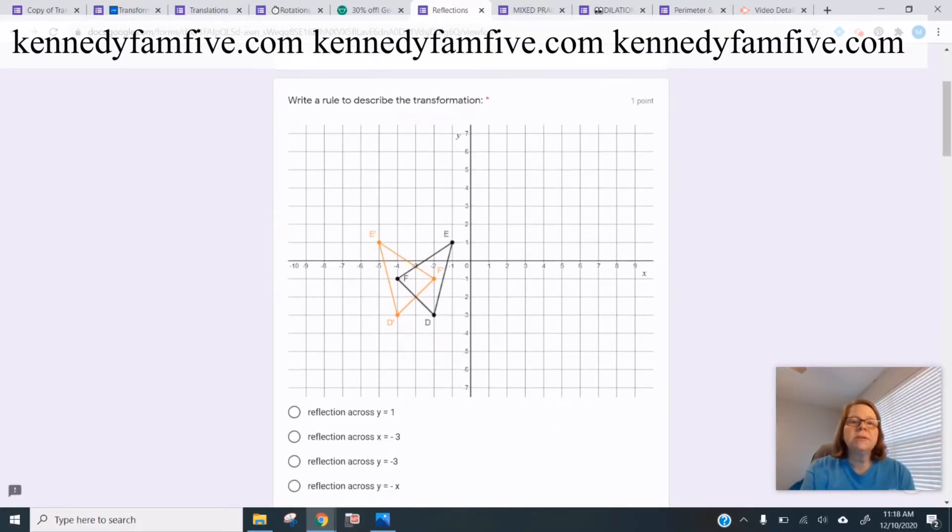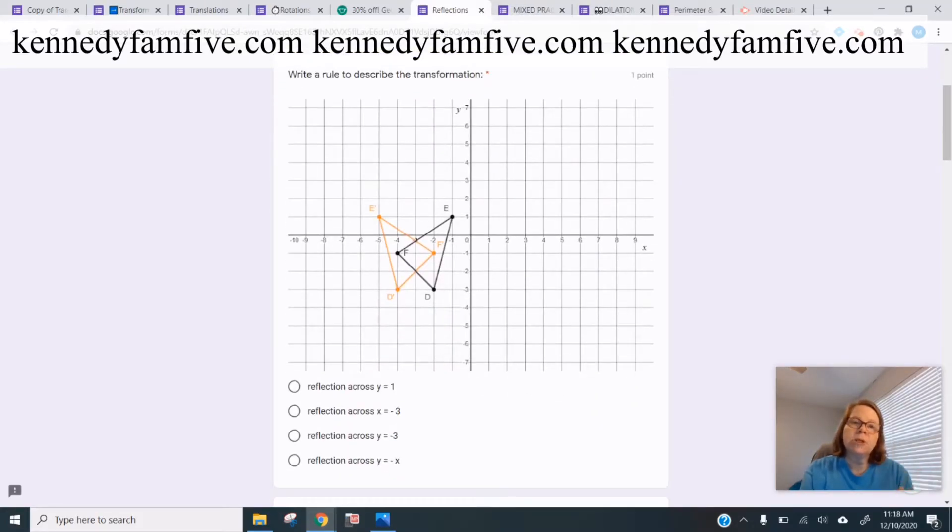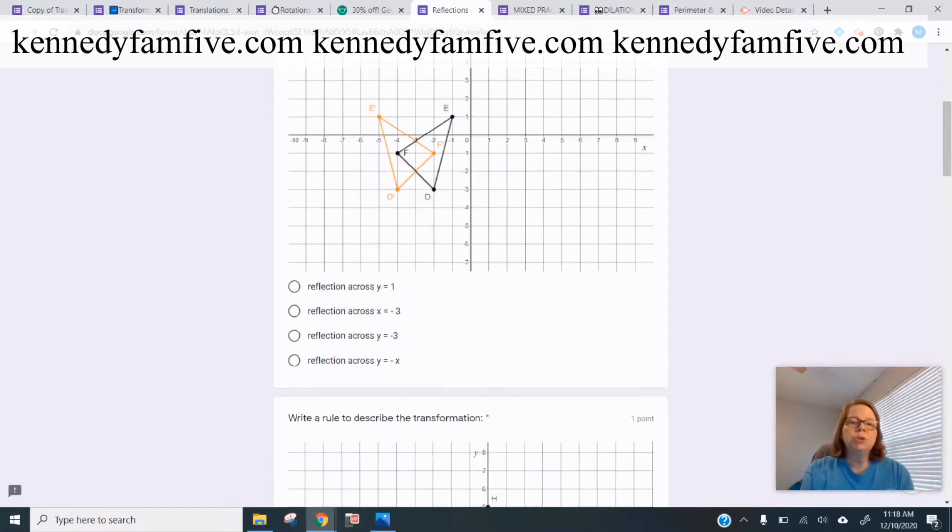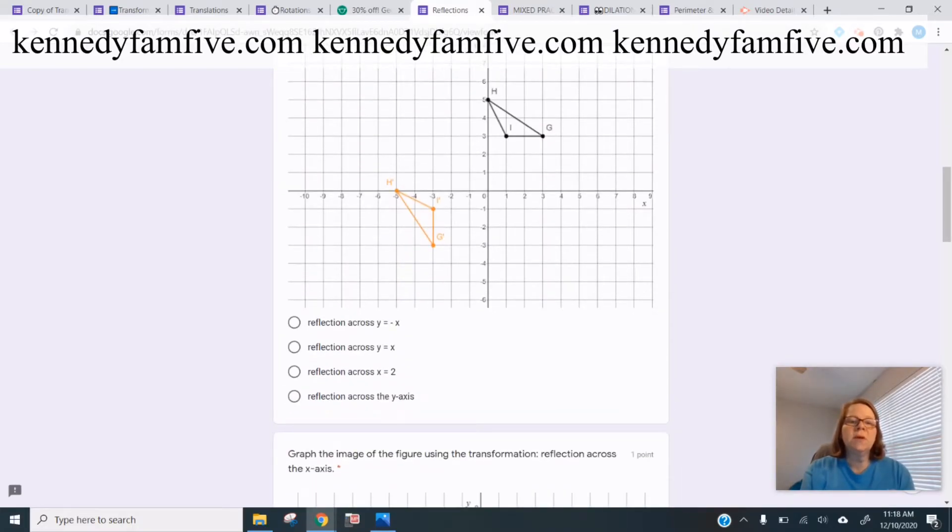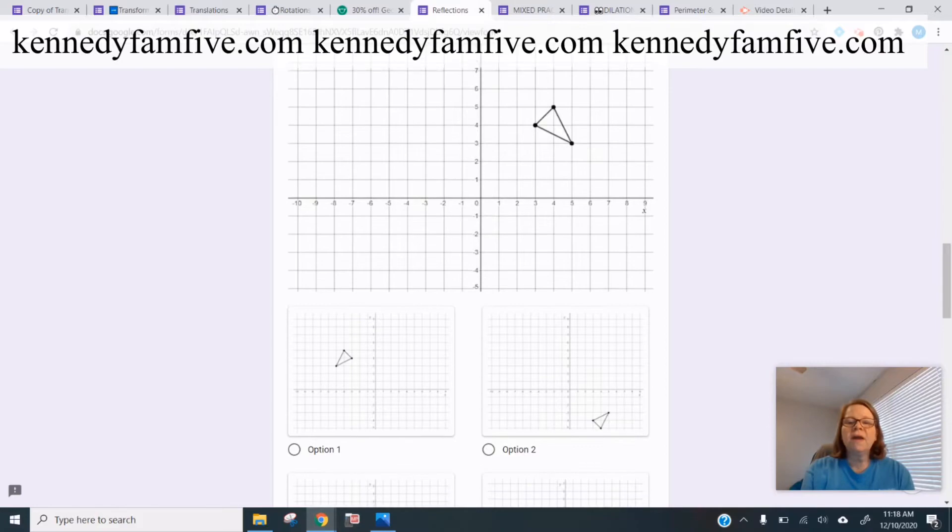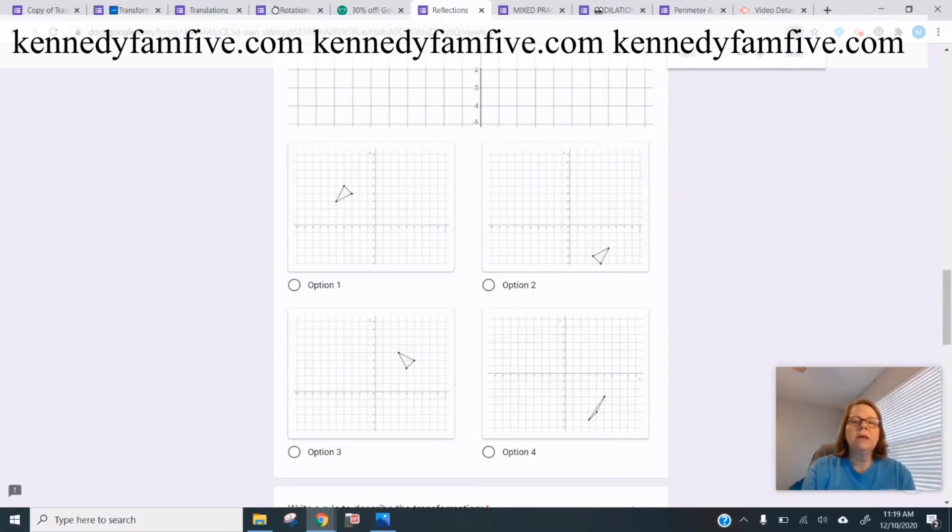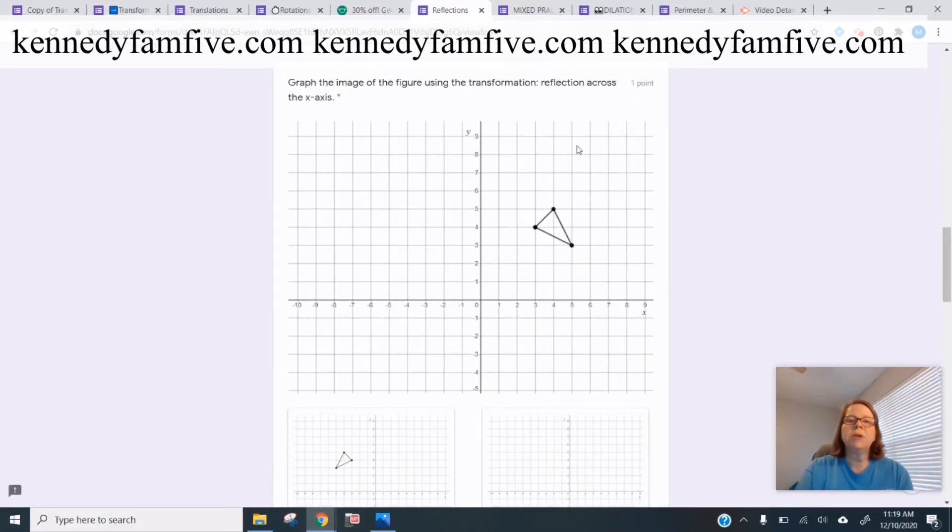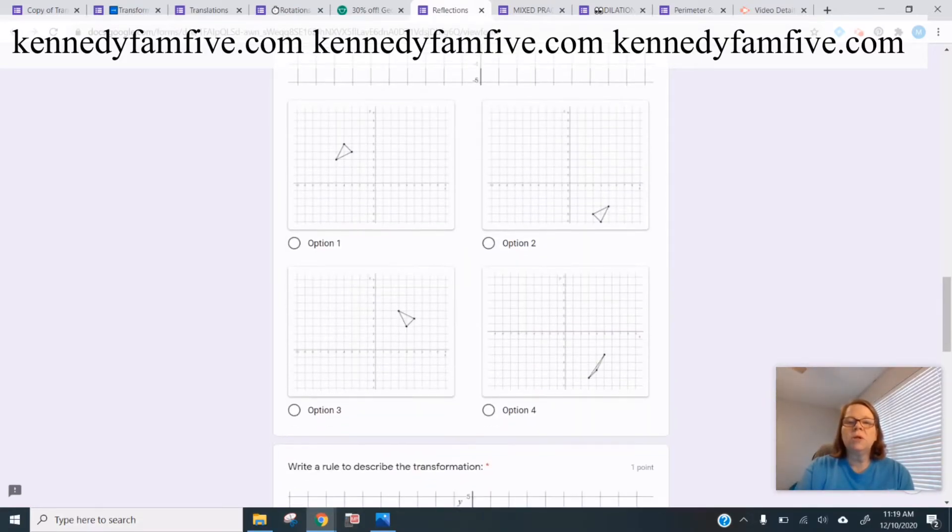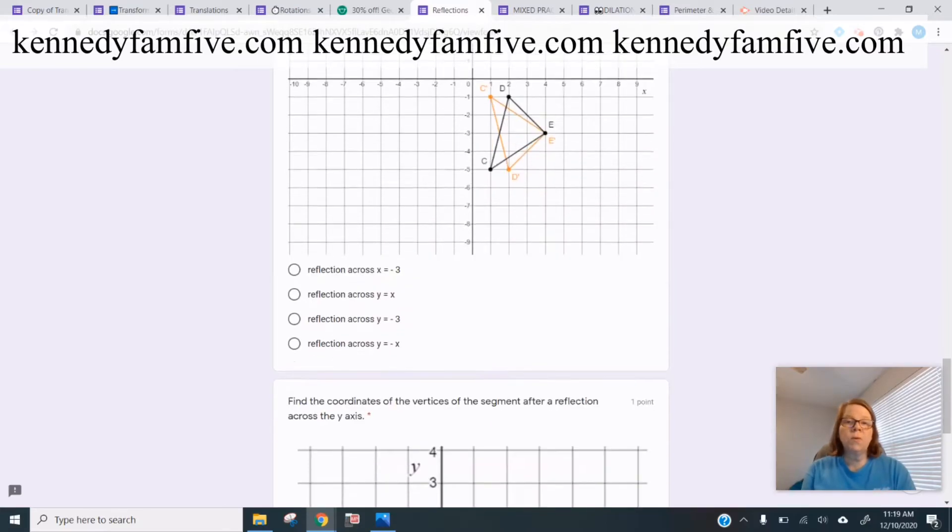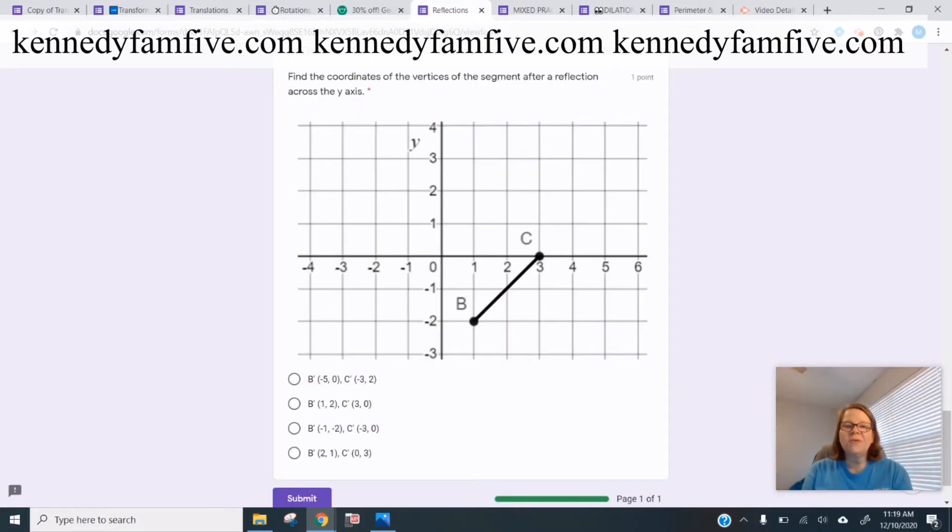So reflections. Let's take a look at this. So here you're seeing a reflection. You have to choose the correct rule. Same thing on this one. Here they have to graph. And they can make it bigger if they need to see it. But really and truly, it's pretty much, you're reflecting across the x-axis. So they should know it needs to be in quadrant four. Write a rule. They have to find the coordinates after a reflection. So for just a segment. So that's a little bit different.